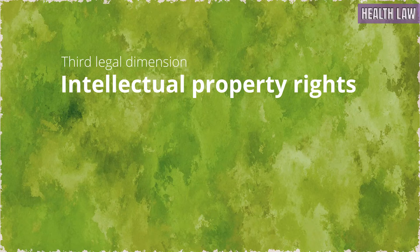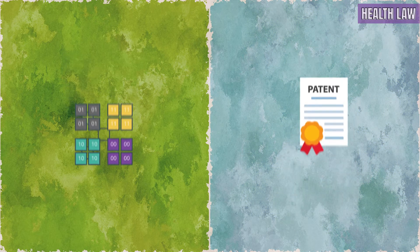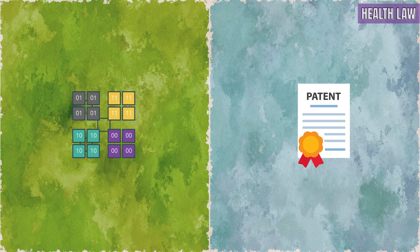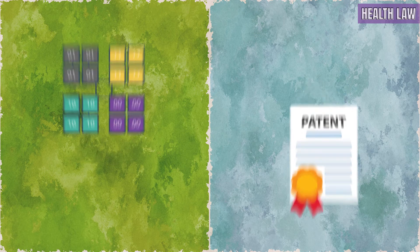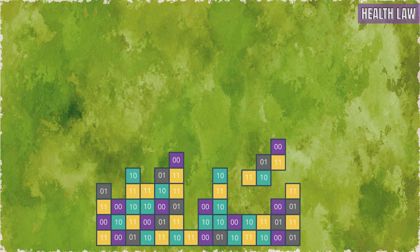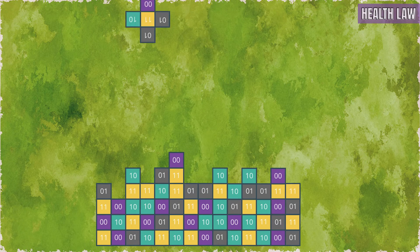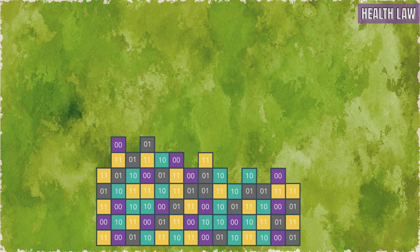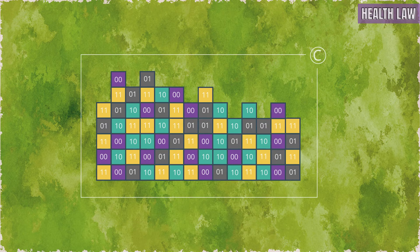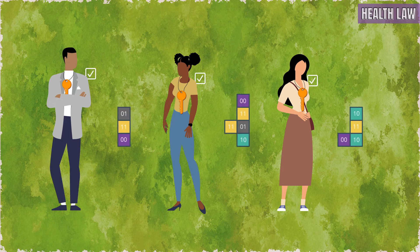The third legal dimension that is relevant to personal genomic sequence data is intellectual property rights. We will consider two kinds: copyright and patents. If someone creates a compilation of personal genomic sequence data — that is, a genomic data set — copyright in such a data set will automatically vest in such a person. Importantly, copyright vests in the data set as a whole and not in the constituent instances of personal genomic sequence data. To use the data set, license out its use, or sell it, the copyright holder would need the consent of two groups: first, the data subjects, and secondly, the owners of all the data instances.